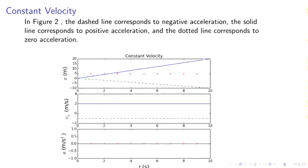The constant velocity, the dashed line corresponds to negative acceleration, the solid line corresponds to positive acceleration, and the dotted line corresponds to zero acceleration. The dashed line is increasing from 0 to 20 in an interval of 10 seconds. Velocity is constant at 2 meters per second, and the acceleration is zero.